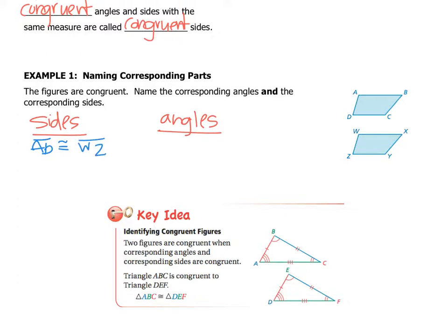So I've got this little segment line on top of it to represent that it's representing a side, and this is the symbol for congruent. If you didn't know, it's an equal sign with a little squiggly on the top. So now let's match up all of our other sides. We've got AB is congruent to WX. We have BC is congruent to XY. And CD is congruent to YZ.